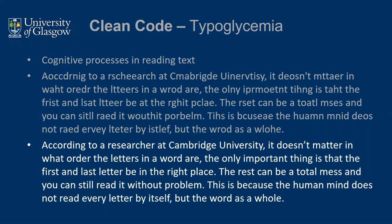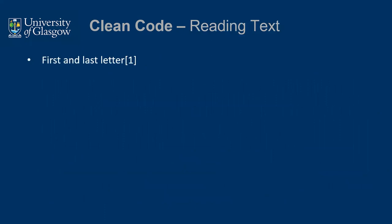If you had one variable called 'book' and another called 'books', they're different words with different last letters, but they're quite similar and you could get confused. Whereas if you had 'book' and 'library', you very much know they're different things, and you're less likely to make mistakes. So the first and last letter and overall word shape are quite important. I have some references at the end that talk a bit more about this.